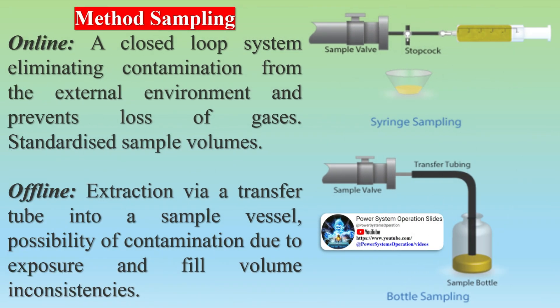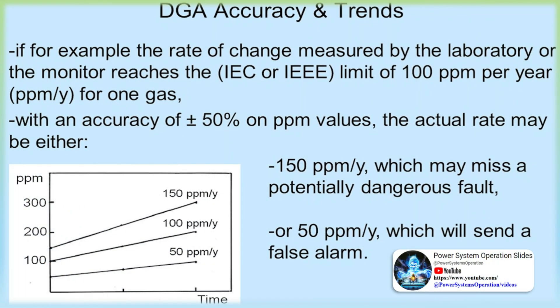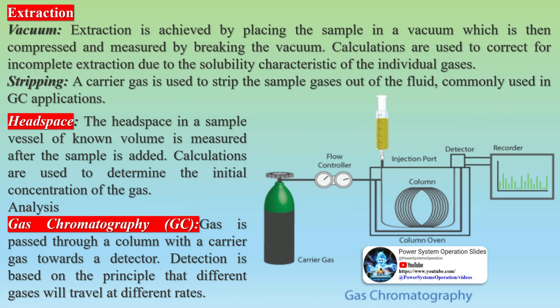Regarding sampling methods: online sampling uses a closed-loop system eliminating contamination from the external environment and prevents loss of gases, with standardized sample volumes. Offline sampling involves extraction via a transfer tube into a sample vessel, with the possibility of contamination due to exposure and fill volume inconsistencies. Extraction methods include vacuum extraction, where the sample is placed in a vacuum then compressed and measured; carrier gas stripping commonly used in GC applications; and headspace measurement, where the headspace in a sample vessel of known volume is measured after the sample is added.